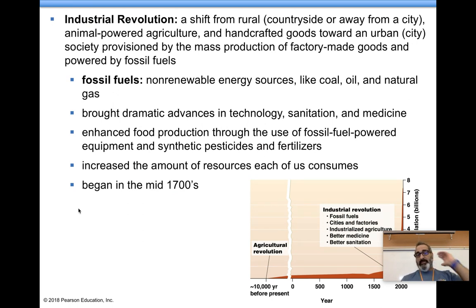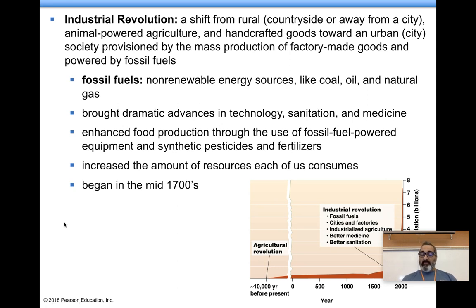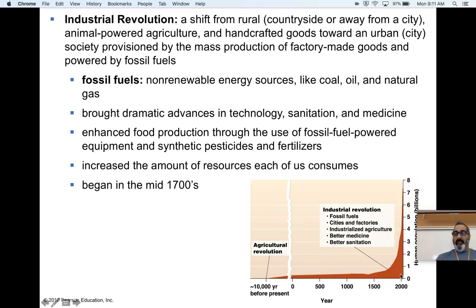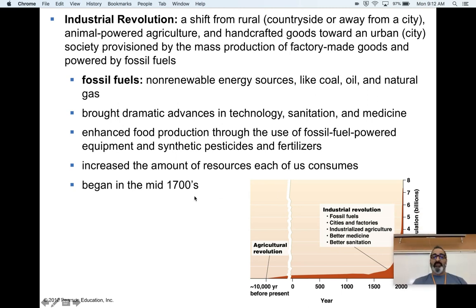The Industrial Revolution happened about mid-1700s into the 1800s. We figured out we could burn fossil fuels like coal or oil for energy to mass-produce things. Factories came into play; huge urban cities came into play. Make sure you know the AP terms rural versus urban — city versus countryside. Technology advanced, medicine improved, farming improved with machines, and people started consuming more goods. You can see an exponential rise in population at that point as a result of the Industrial Revolution.